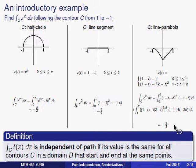Well, this will happen sometimes, that some integrals will be the same no matter which contour you integrate along, and so we'll come up with a definition for that. We'll say that an integral is independent of path if its value is the same for all contours that start and end at the same points, so long as the contours belong to a domain D.